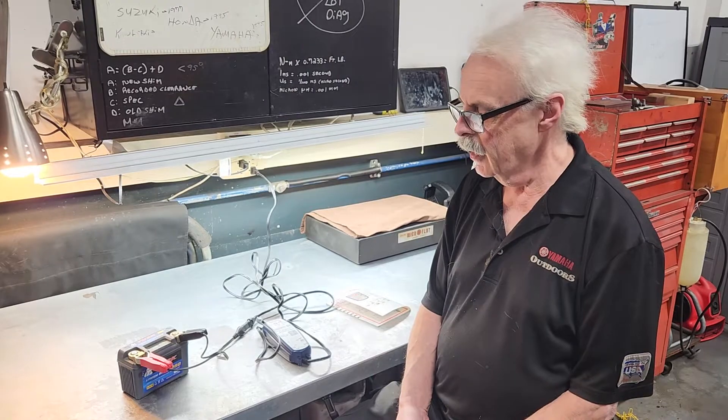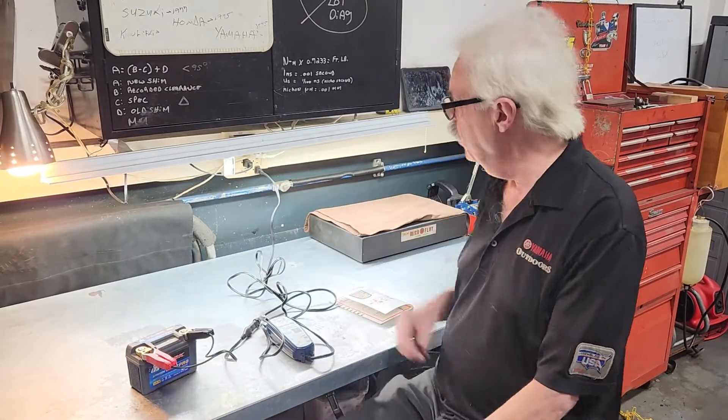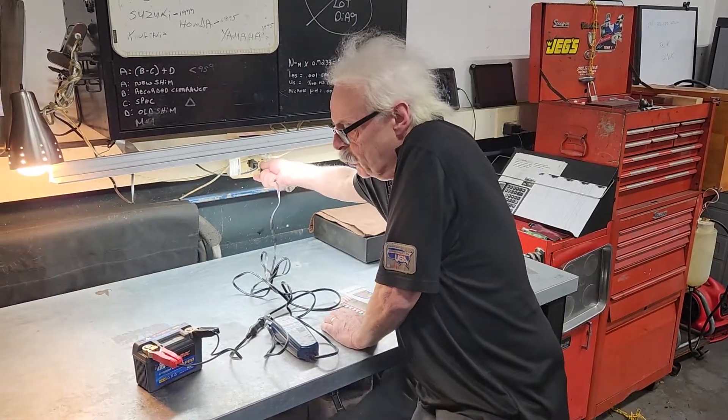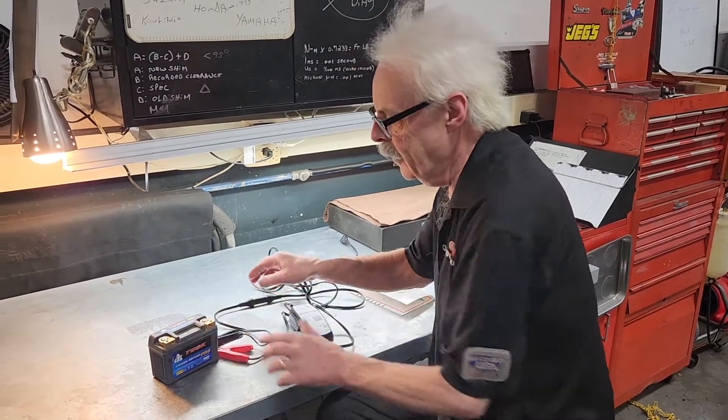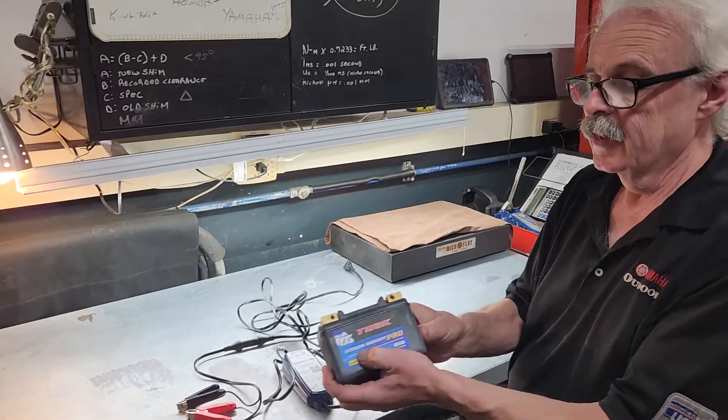Lithium-ion batteries are usually installed in competition models or some sport bikes, high-end sport bikes. How do you know if you have a lithium-ion battery? Probably says it on there.